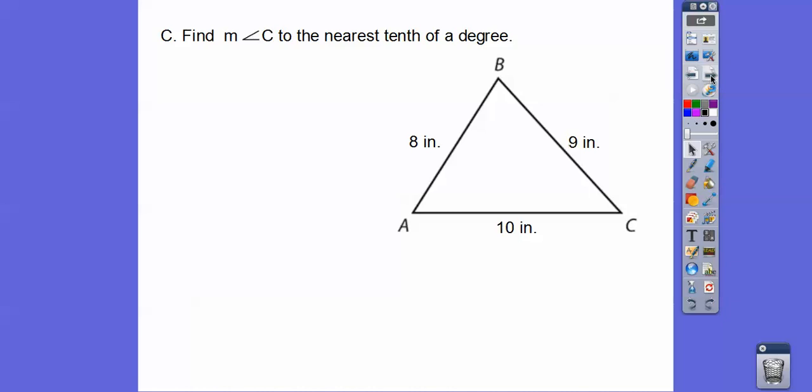So find here angle C to the nearest tenth. So here's angle C over here. There's no angles in here, so we can't use the law of sines, so we have to use the law of cosine. So if we're going to do the cosine of C, then we're going to say this side squared equals this side squared plus this side squared minus 2 times this times this times the cosine of angle C.